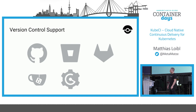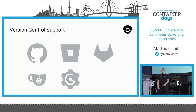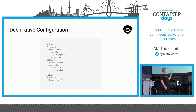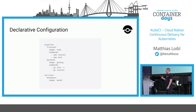Drone supports various version control systems and hosters. You can use public ones, or use Gitea or Gogs if you want to host privately, or GitLab. There's a declarative YAML configuration that needs to be placed in the root of your repository. You commit it, and then Drone will ask GitHub or whatever you're using to get the configuration and start acting on what's specified.